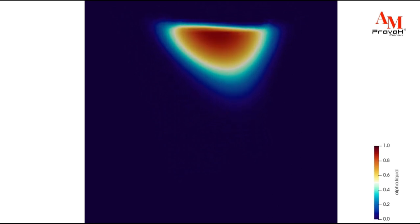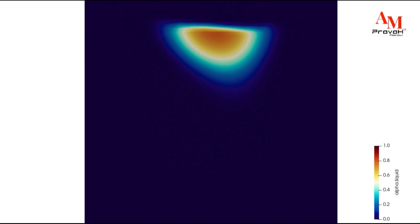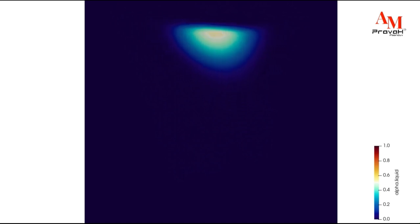Uncontrolled keyhole dynamics can cause flaws such as porosity, air pockets, and spatter — ejected molten material.